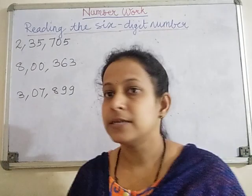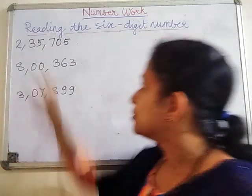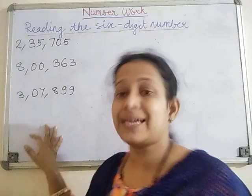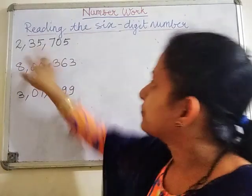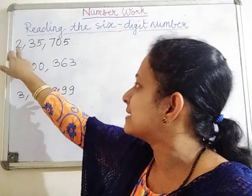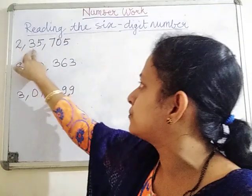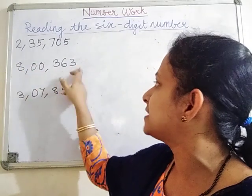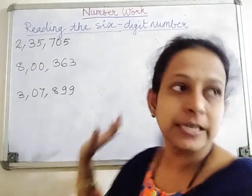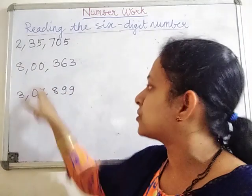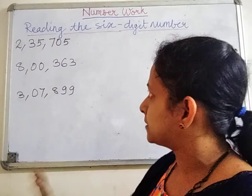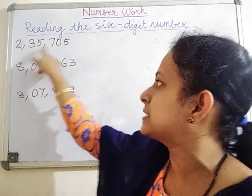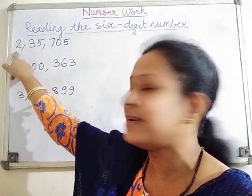Let's learn to read six-digit numbers. Here I have written some numbers. First let us count the number of digits - there are six digits in each of these numbers. Now let us identify the places: this is units place, tens place, hundreds place, thousands place, ten thousands, and lakh.